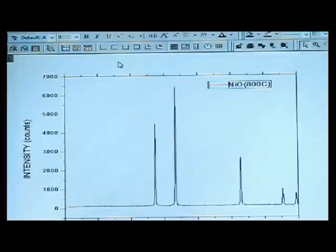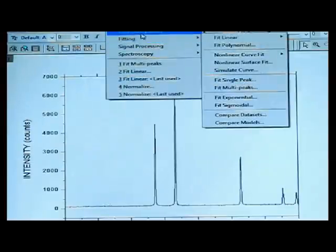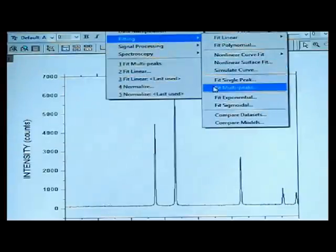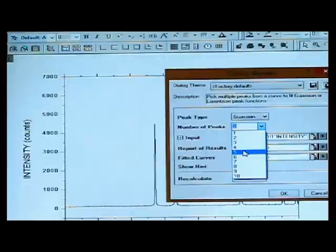At first, we have to identify the peaks. So we click on the analysis menu bar, go to peaks, then go to fit multi peaks. Here we should give the number of peaks. Since there are 5 peaks on the curve, we have given it as 5. Then click on OK.